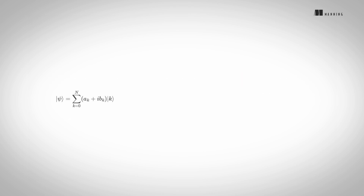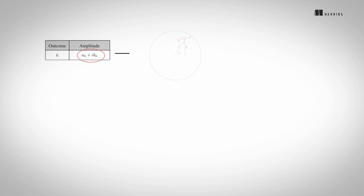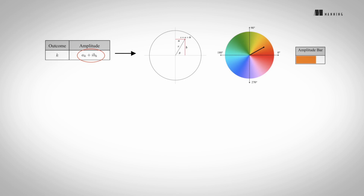Unlike many existing resources, which rely heavily on abstract mathematical notation, our approach is tailored to developers and computer professionals. We use familiar concepts like binary strings and Python list comprehensions, as well as visual elements like tables and bar charts, to make quantum computing more accessible. When we introduce quantum states, we represent them with tables and code instead of complex mathematical notation. We use colors to visualize complex numbers to make information about a state easier to comprehend.